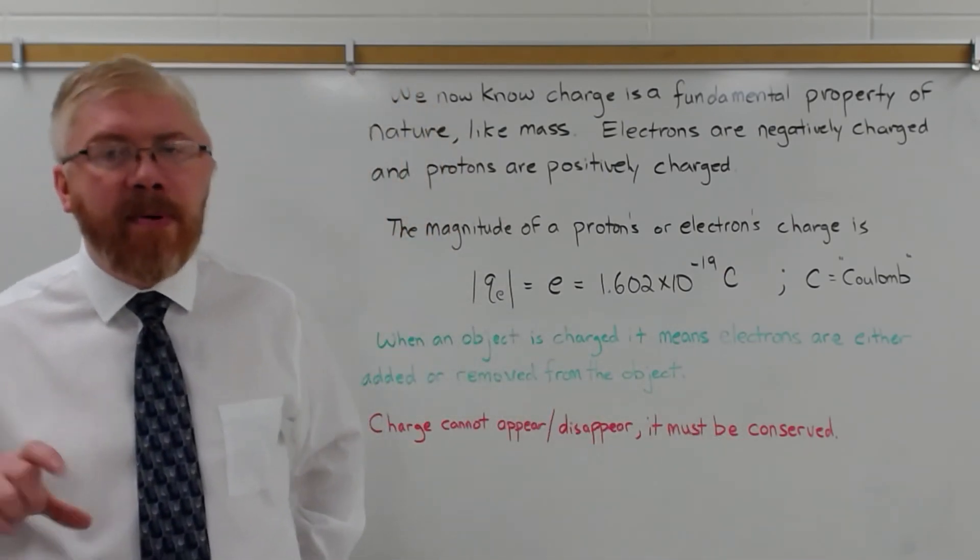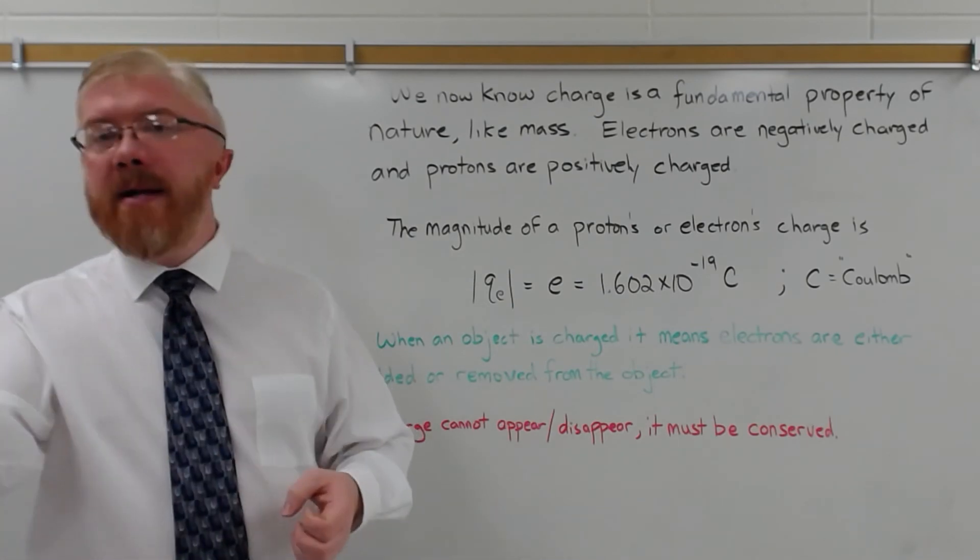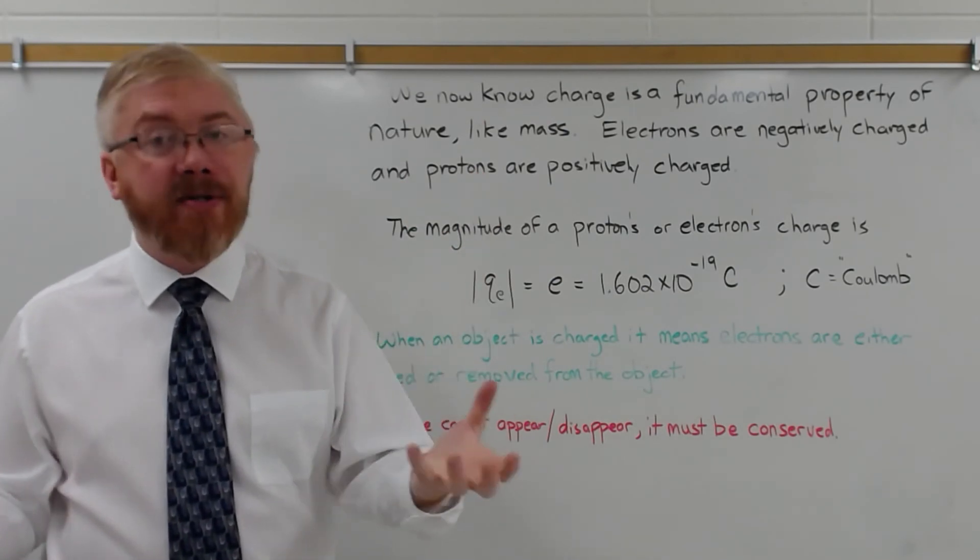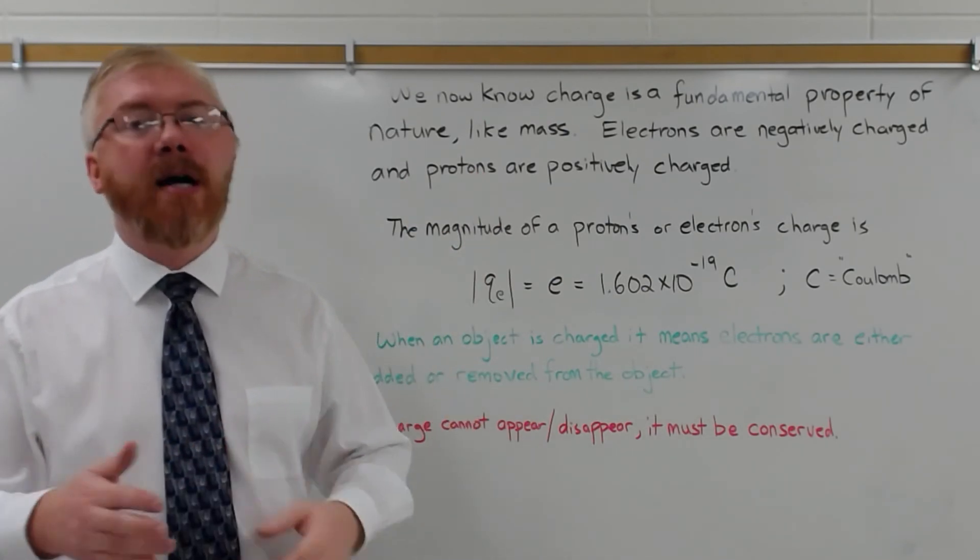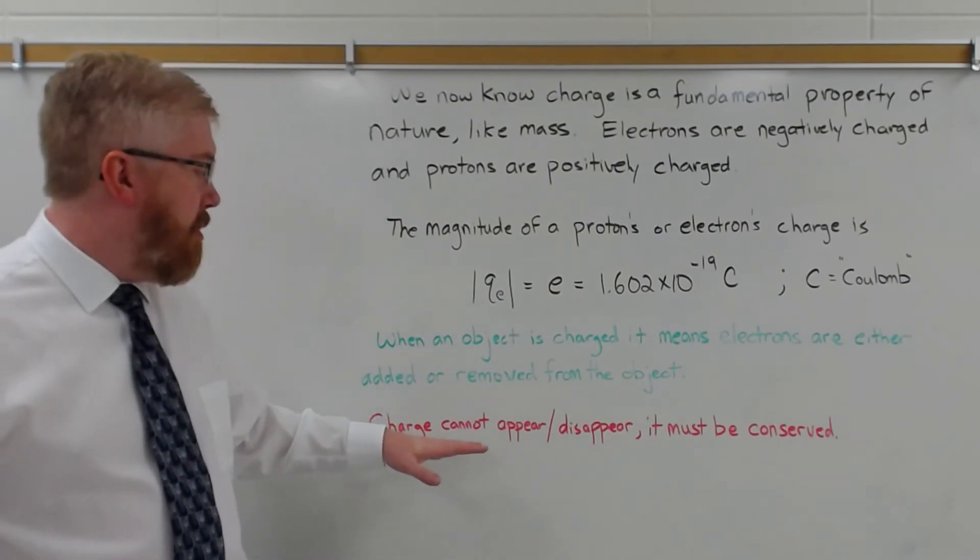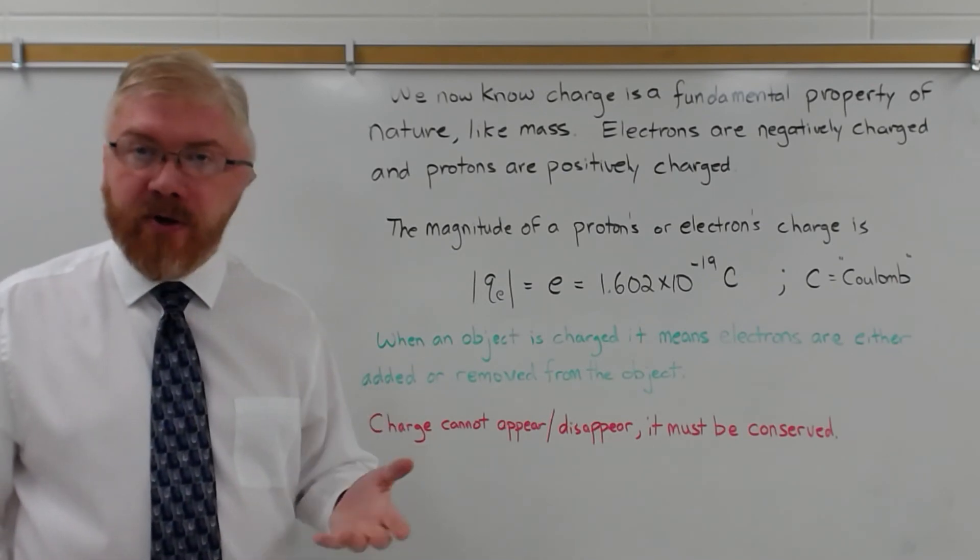Charges have to be conserved. But remember, there's negative and positive charge. So if I start off with zero, and I create an electron, that means I create a positive charge as well. That positive charge is called a positron. We'll talk about that later on in this class. That's anti-matter.